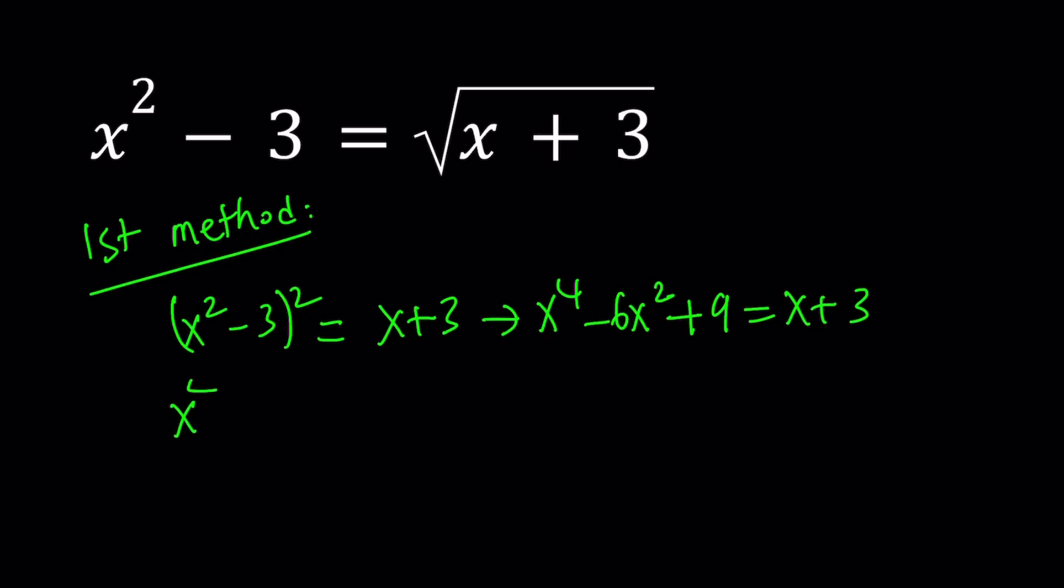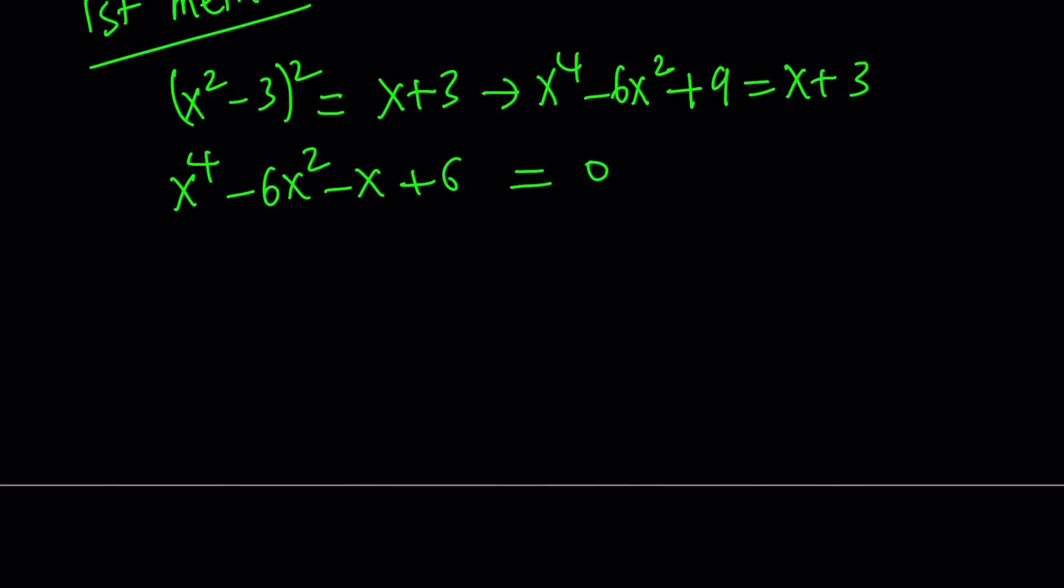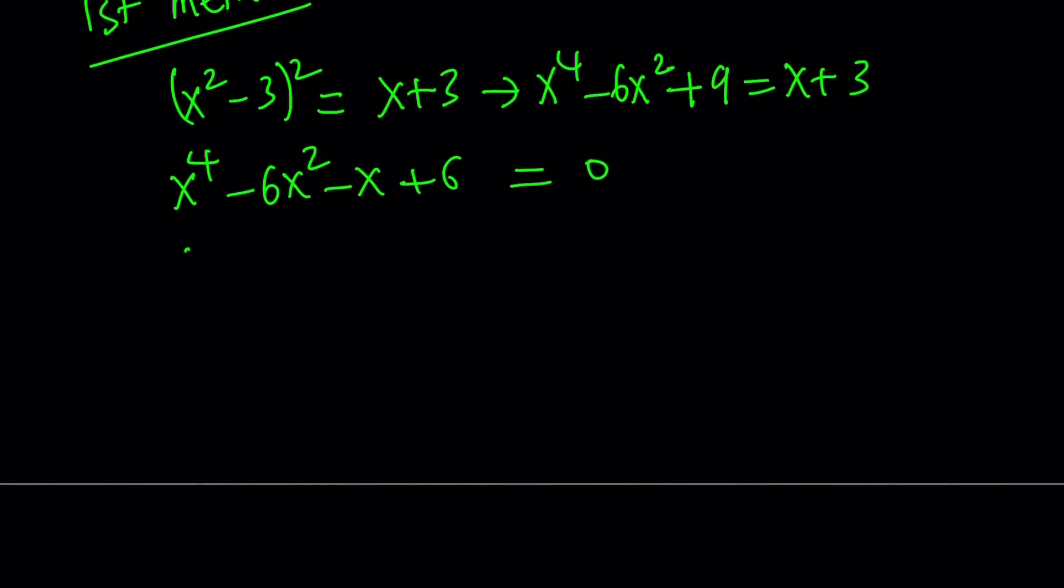Let's put everything on the same side. 9 minus 3 is equal to 6. This kind of looks factorable, doesn't it? Let's try to factor it by grouping. Take x squared out. x squared minus 6. And then take a negative one out. You get x minus 6. Uh-oh. It's not factorable. Too bad.